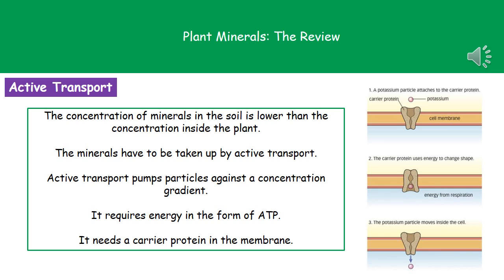We use the process of active transport, which pumps particles against the concentration gradient. To do that, it requires energy in the form of ATP. In the cell membrane we have special proteins called carrier proteins. Something like potassium, for example, joins with the carrier protein at the top, and then energy is used to change the shape of the carrier protein to move the mineral from the outside area to inside.